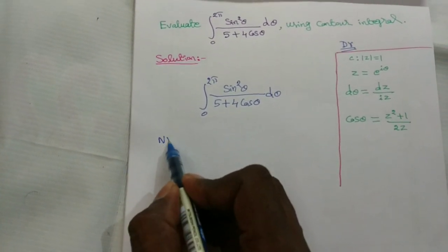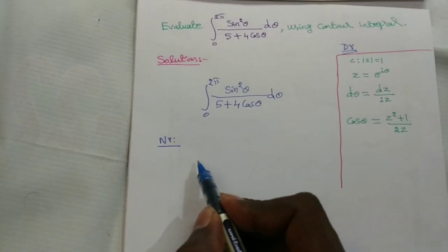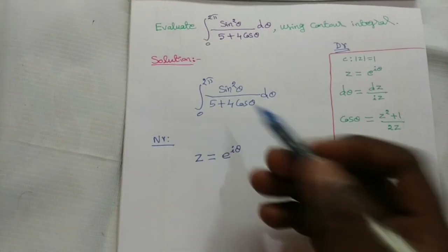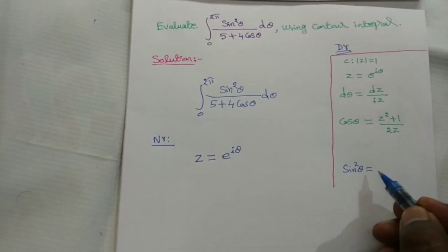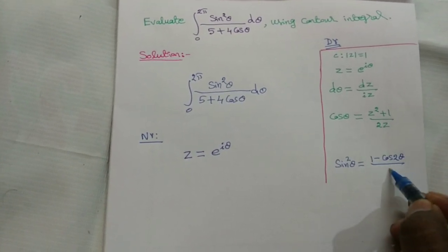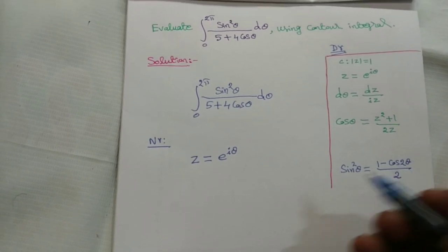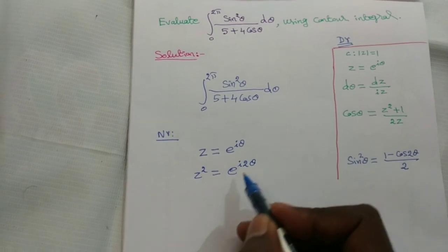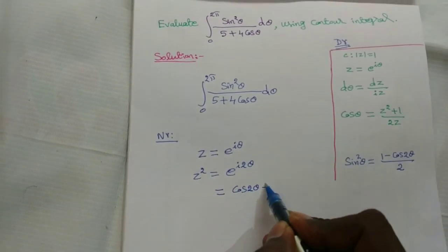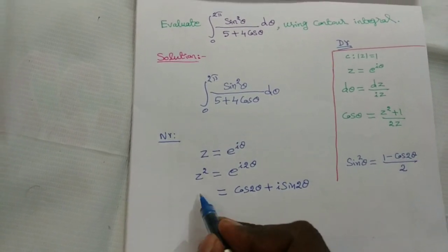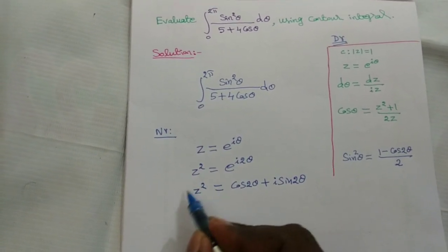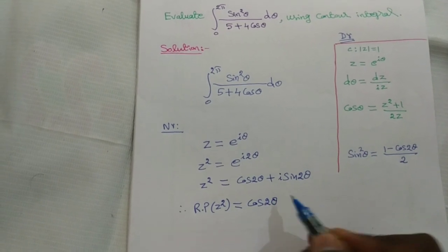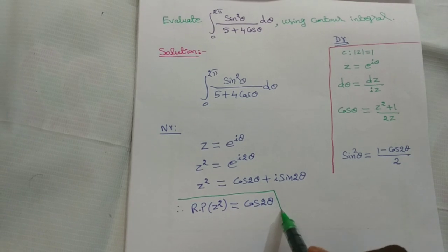For the numerator, we already consider z = e^(iθ). In the numerator we have sin²θ, and the formula is sin²θ = (1 − cos2θ)/2. Now squaring both sides: z² = e^(i2θ) = cos2θ + i·sin2θ. So cos2θ is the real part of z². Therefore, real part of z² equals cos2θ — this is very important.